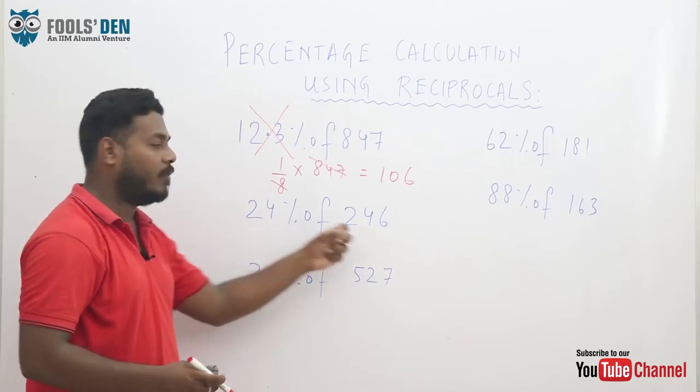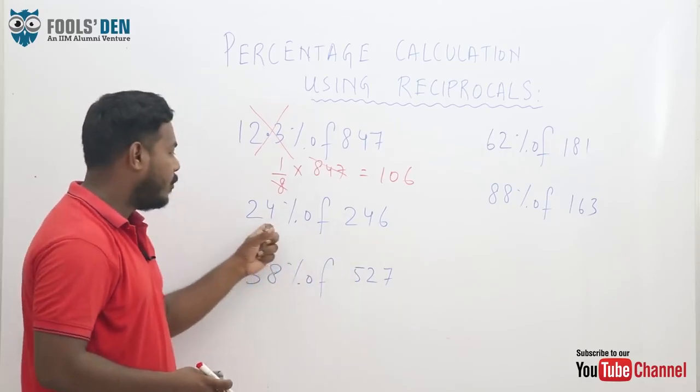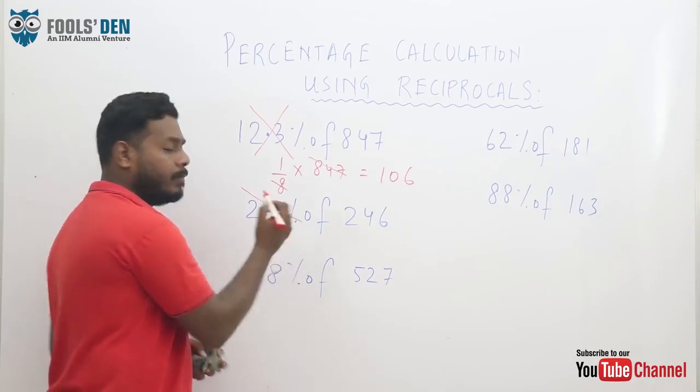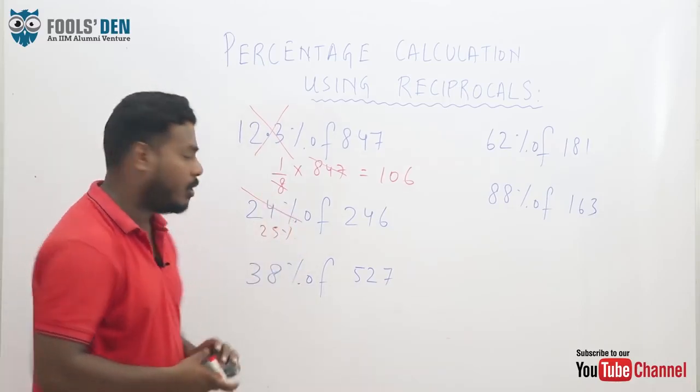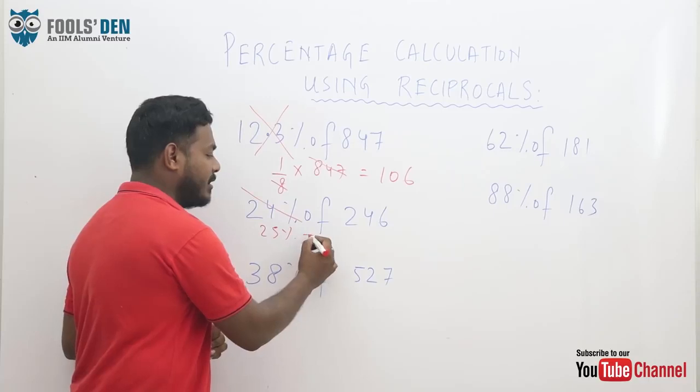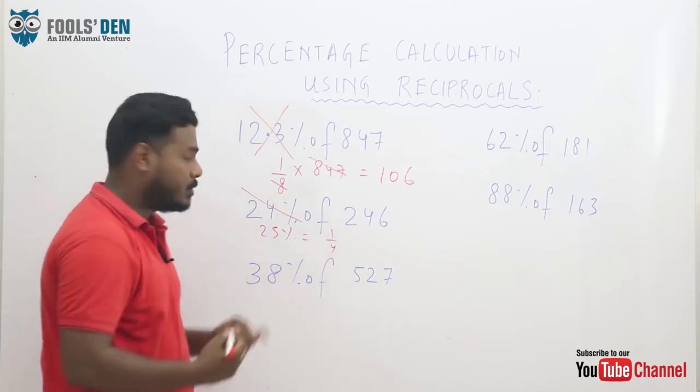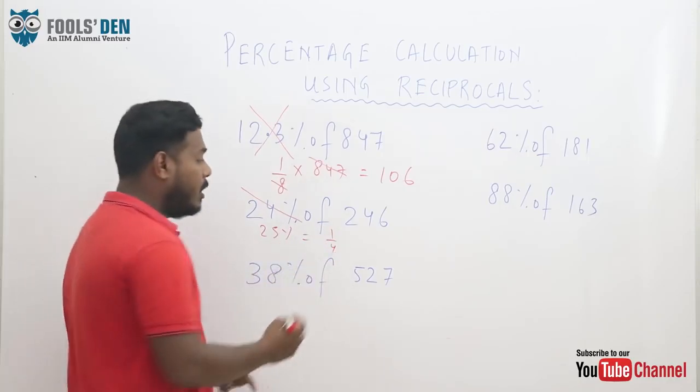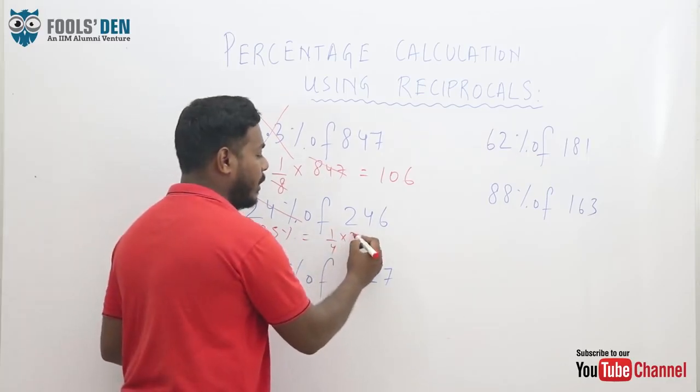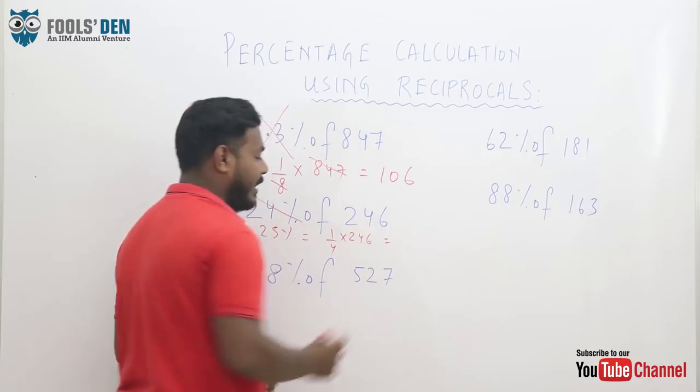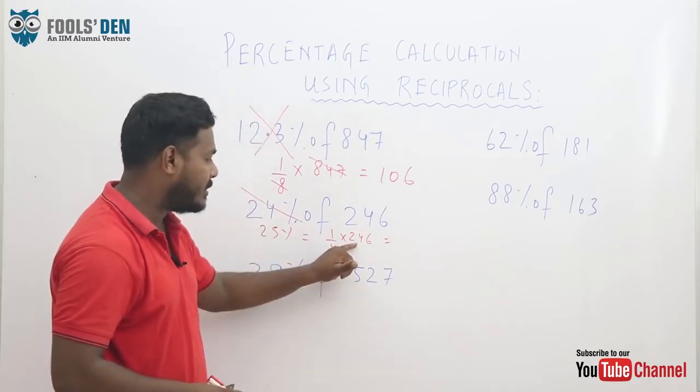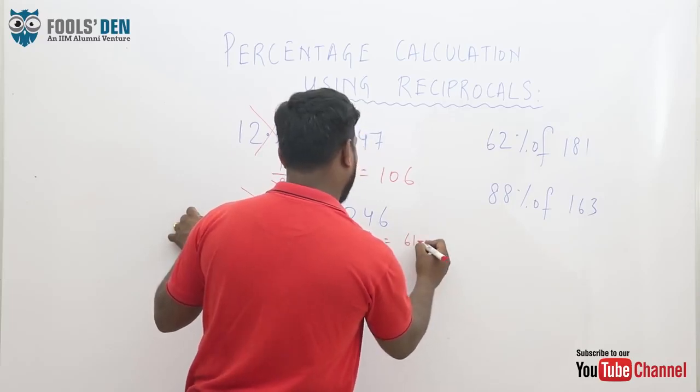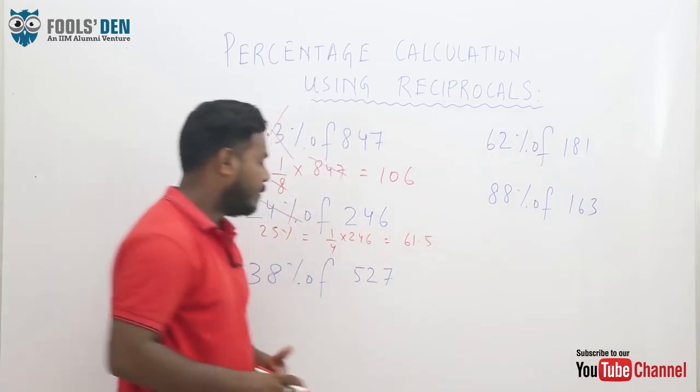Next, suppose you need to calculate 24 percent of 246. What is 24 percent? Is this close to 25 percent? And using the reciprocals concept, 25 percent is nothing but 1 by 4. So 24 is approximated to 25 and 25 is 1 by 4. So you just need to do one calculation, 1 by 4 of 246. 246 divided by 4, it'll be approximately 61.5.